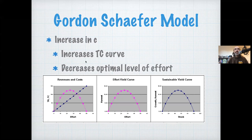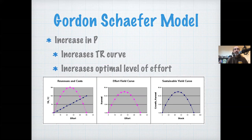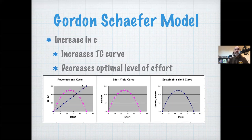Things work in the other direction if we increase costs. Increasing costs increases the slope of the total cost curve, so the point of tangency moves to a lower level of effort. An increase in costs therefore increases the total cost curve, decreases the optimal level of effort, decreases harvest, and increases the overall population size — less harvest leads to a higher equilibrium population.